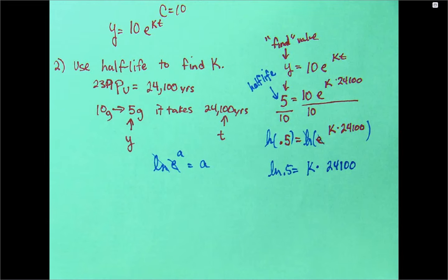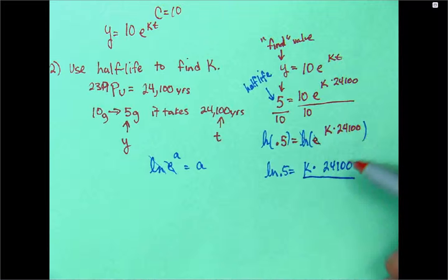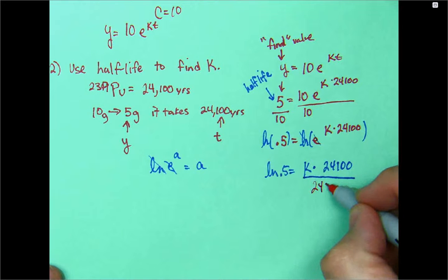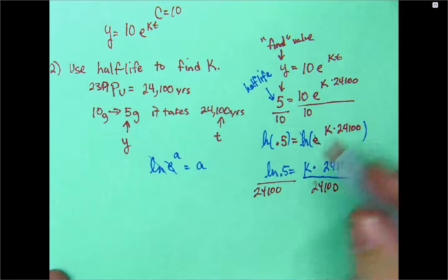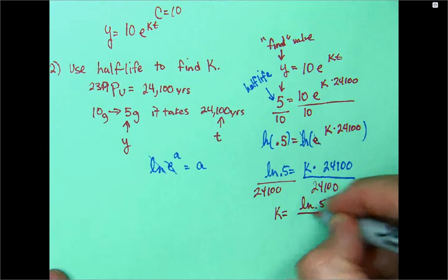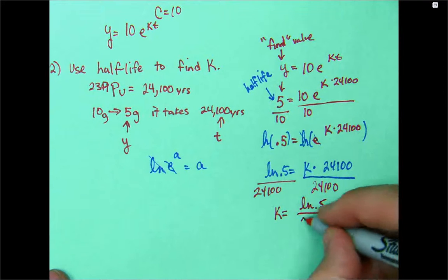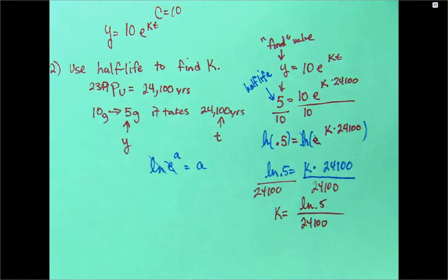So, I just have the natural log of 0.5 is equal to K times 24,100. Divide that by 24,100. K is equal to the natural log of 0.5 divided by 24,100. Which is a pain to use. Which is why I'm going to show you something that you want to use. And this is how you want to approach this in your calculator.